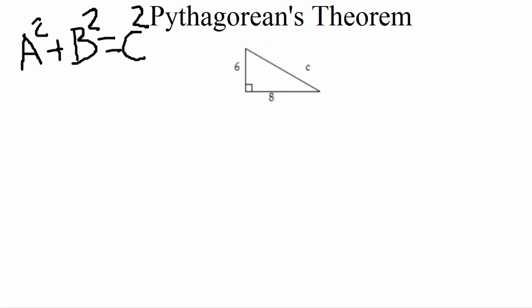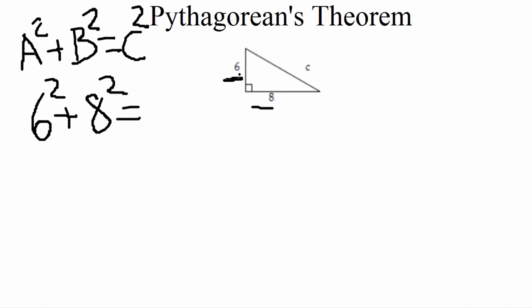Let's go ahead and work the problem we have here. We're going to plug into the formula. I'm going to say that 6 is going to be a, so plugging in: 6 squared plus b squared. Since I used 6 as a, that means 8 has to be b, so next I have 8 squared. That equals c squared — we don't know c yet, so it stays as c in our formula: 6 squared plus 8 squared equals c squared.